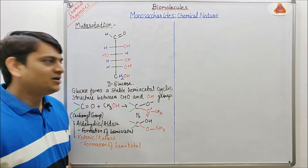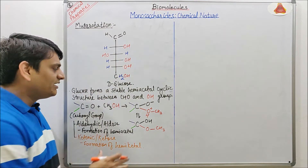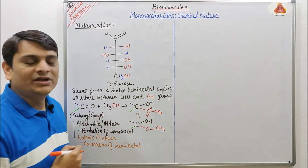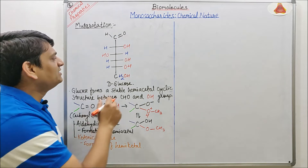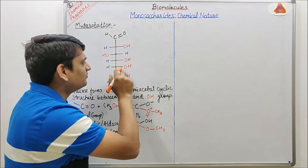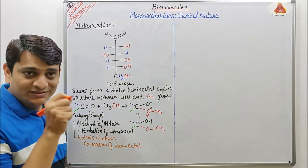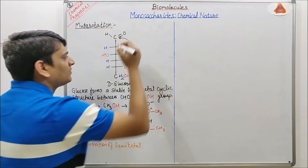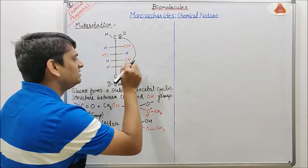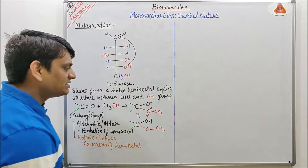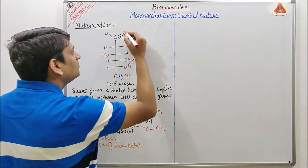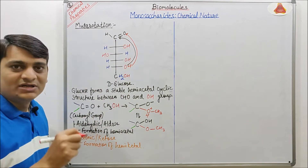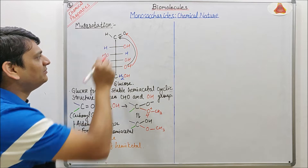Now coming to the structure of D-glucose. According to this mechanism, carbon-1 forms a bond with the OH group present on the most distant asymmetrical carbon. The hydrogen present in this OH group is transferred to the carbonyl oxygen. Ultimately this D-glucose forms a cyclic hemiacetal.